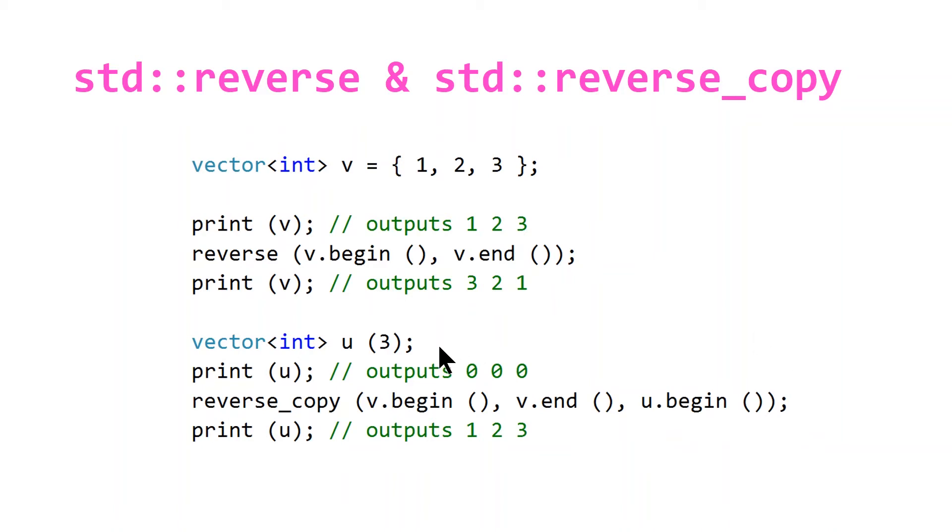And then we are reversing what is currently already been reversed, so we're bringing it back to its original order. So it will output 1 2 3 on the final line.